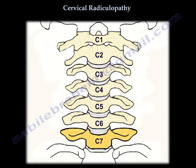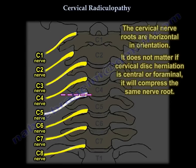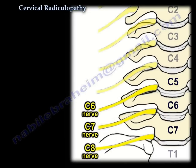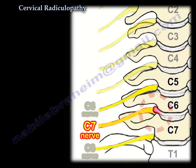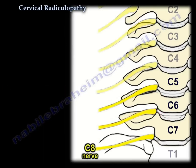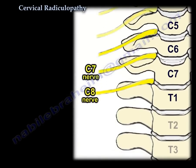There are seven vertebrae but eight nerve roots. The cervical nerve root is horizontal in orientation, so it doesn't matter if the disc is central or foraminal — it will affect the same nerve root. For example, a disc at C6-C7 will affect the C7 nerve root. This nerve root runs above the pedicle — C7 nerve root runs above the C7 pedicle. C8 nerve root runs above the T1 pedicle, and T1 nerve root runs below the T1 pedicle.